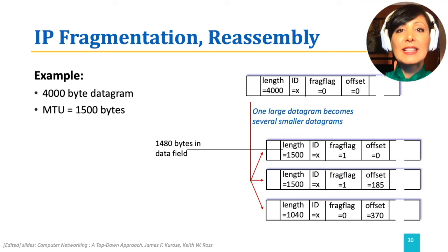The third datagram will have the remainder of the bytes, plus 20 for the header bytes, which would be a length of 1,040 in total. The fragmentation flag will be 0, showing that it is the last segment in the fragment, and offset showing its starting byte, which is 2,960 divided by 8, which is 370.